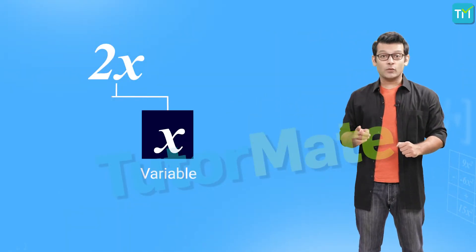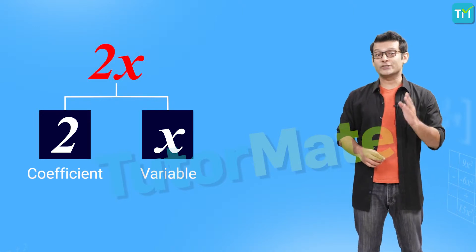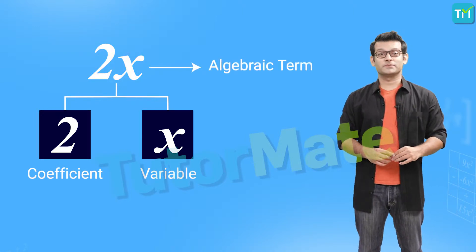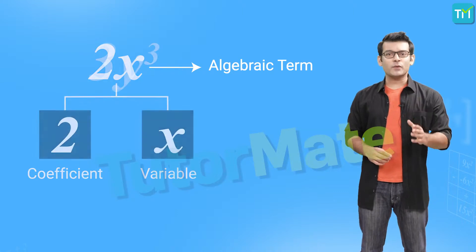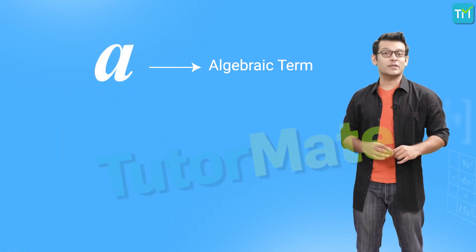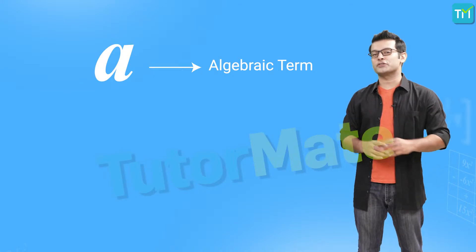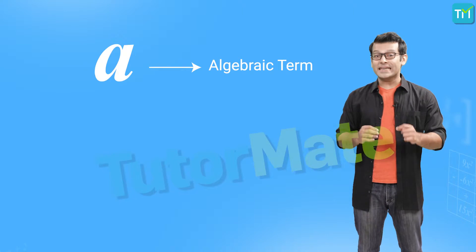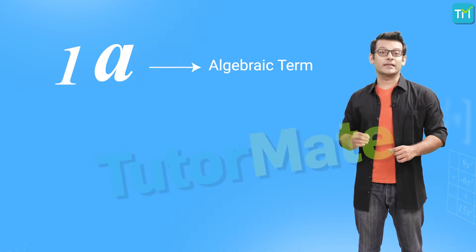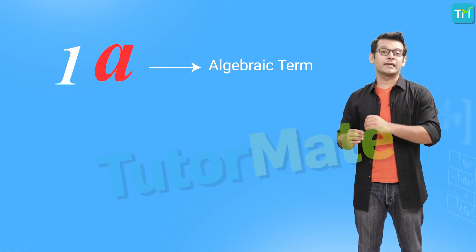If we write a term say 2x, then x here is the variable while 2 is called the coefficient. Also 2x is called an algebraic term. In fact, terms like 3y cube and even a single variable a are also algebraic terms because we can write a as 1 into a, so 1 becomes the coefficient of the variable a.